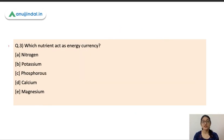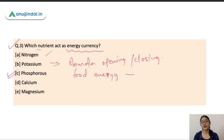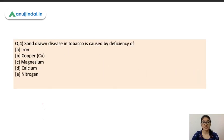The next question is: which nutrient acts as the energy currency? Nitrogen's function we've seen; potassium, discussed in the last session, is important for stomatal opening and closing, which means maintaining a favorable water balance in the plant. Phosphorus acts as the energy currency — it basically converts food energy into chemical energy. That is its main function. Calcium and magnesium we have already discussed.